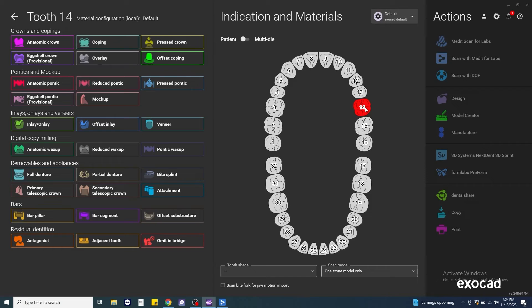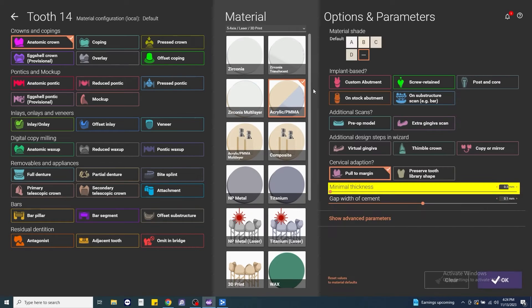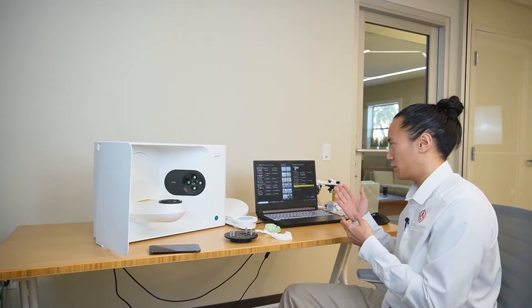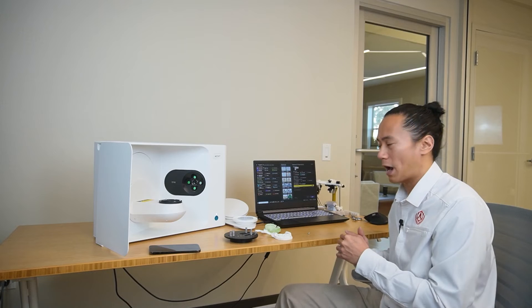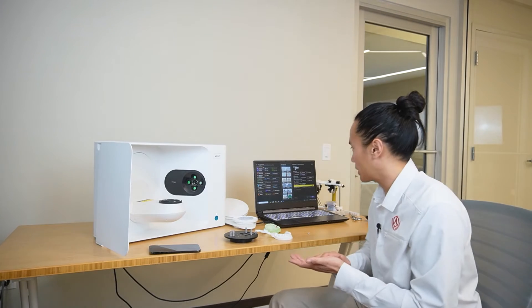And we'll set up our working tooth first, anatomic crown. We'll mill this out in PMMA. We'll select our shade, A-shade. For implant-based options, if we were designing the custom abutment, then we would choose custom abutment here. But if we're just using a screw retained crown, we'll select screw retained.